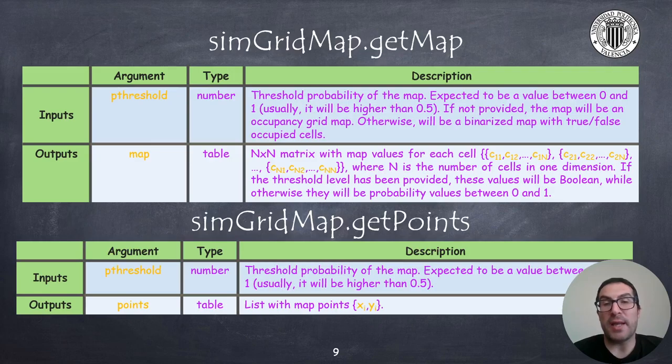The getMap and getPoints functions allow you to obtain information about the map, and they can be used for many other purposes. So the getMap function returns a map, which is just basically a matrix or table in matrix form, with the values of the cells of the occupancy grid map.